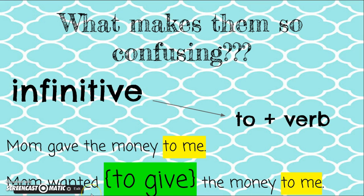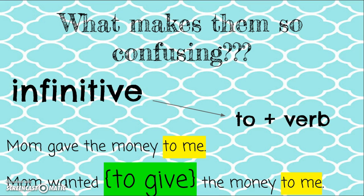In 'Mom wanted to give the money to me,' I see 'to' again. This time 'to' is followed by a verb — it happens to be an action verb. You'll see that I have brackets around it because as we go through these in class, we highlight prepositional phrases and put brackets around infinitives. That's how we can visually see how they're used in the sentence — that they're very different.